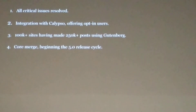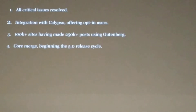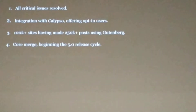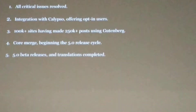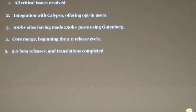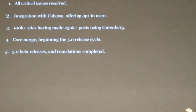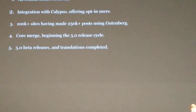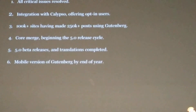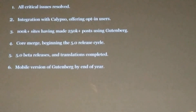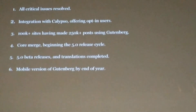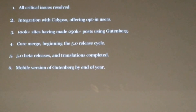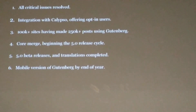We're going to merge with core and then the 5.0 release site — beta releases, translations. There will be full mobile versions of Gutenberg by the end of the year on the iOS and Android app, so by August it won't break when you move between them. Gutenberg is built in a way that makes the content backwards compatible.